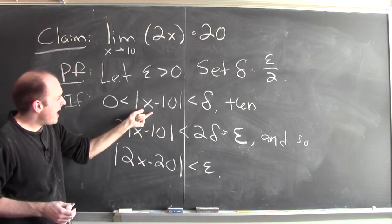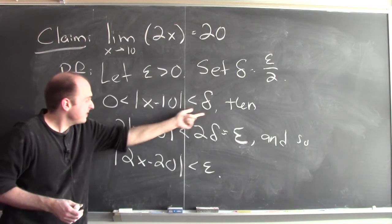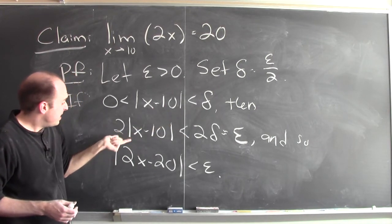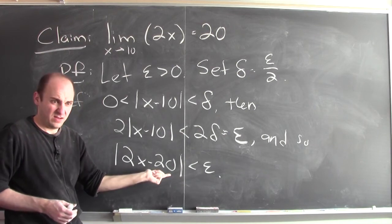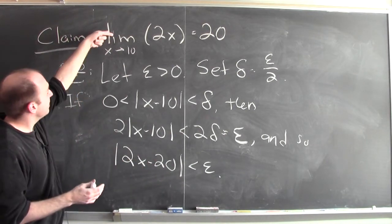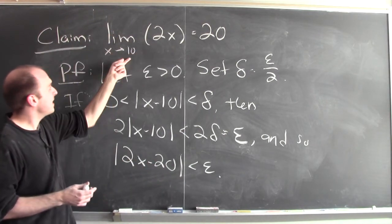And then I verify that if x is within delta of 10, then 2x is within epsilon of 20. And that's exactly what it means to say that the limit of 2x is 20 as x approaches 10.